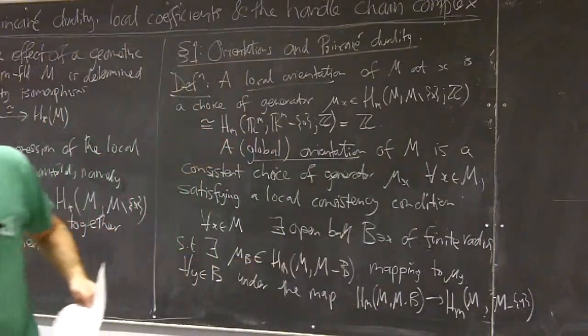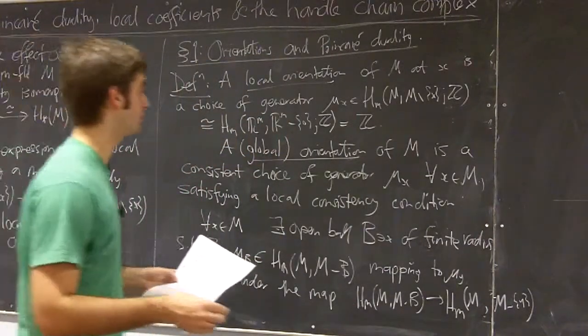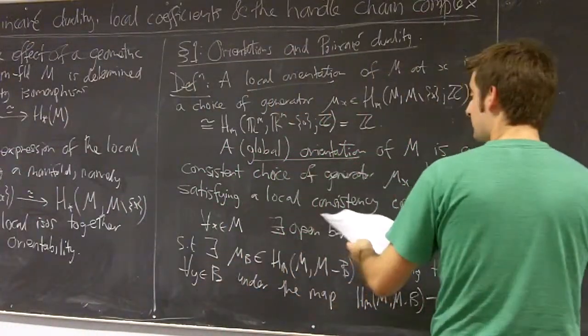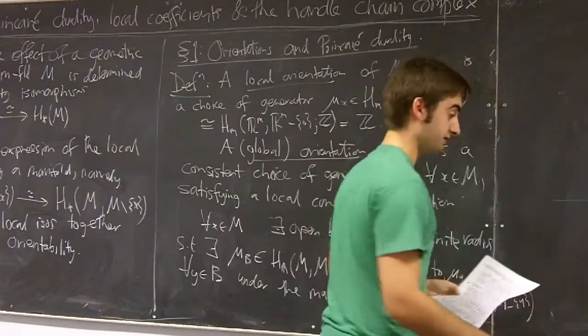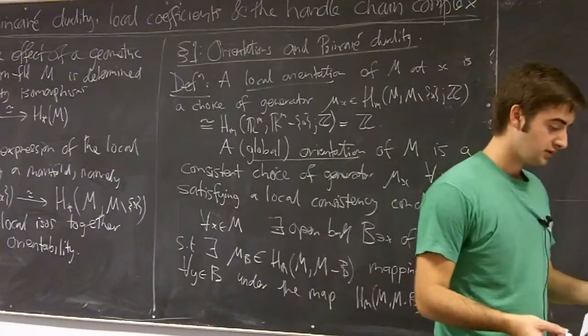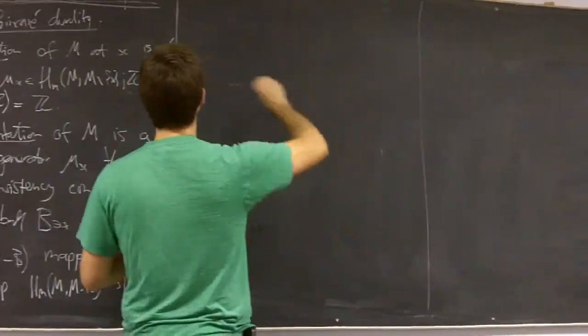and that's M minus y. Now if we can find a consistent choice of generators then we say that M is orientable.